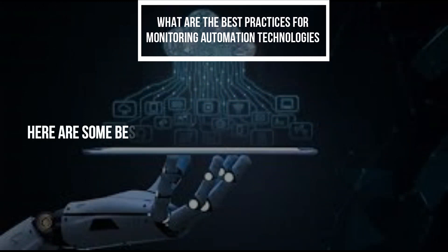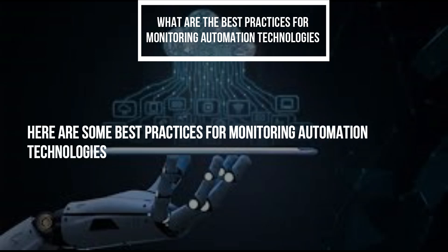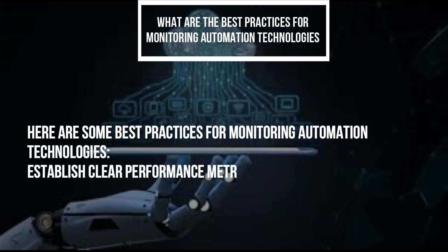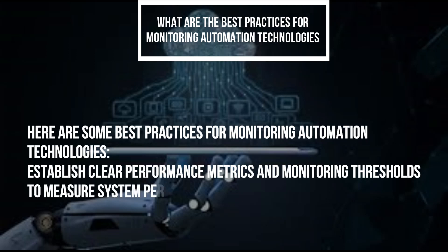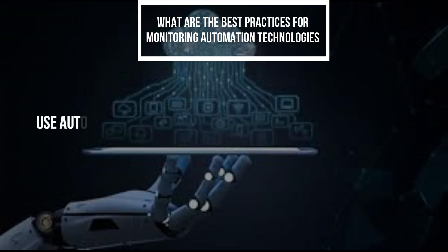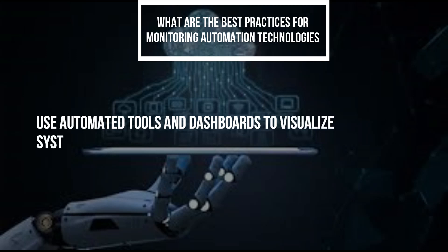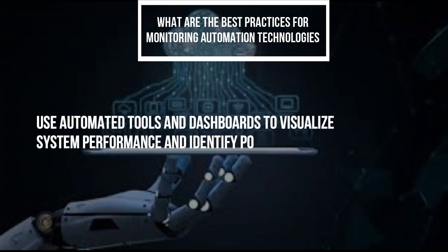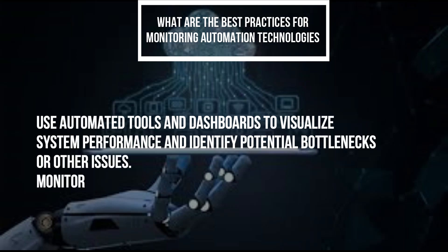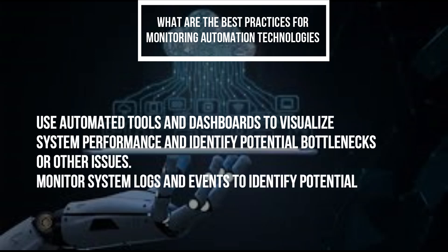What are the best practices for monitoring automation technologies? Here are some best practices: establish clear performance metrics and monitoring thresholds to measure system performance, and monitor system performance in real-time using alerts and notifications to detect potential issues. Use automated tools and dashboards to visualize system performance and identify potential bottlenecks or other issues.